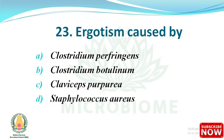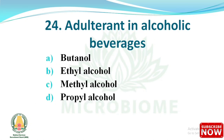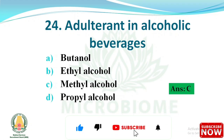Next question: ergotism is caused by — options: (A) Clostridium perfringens, (B) Clostridium botulinum, (C) Claviceps purpurea, (D) Staphylococcus aureus. The right answer is option C, Claviceps purpurea. Next question: the adulterant in alcoholic beverages is — options: butanol, ethyl alcohol, methyl alcohol, or propyl alcohol. The right answer is option C, methyl alcohol.